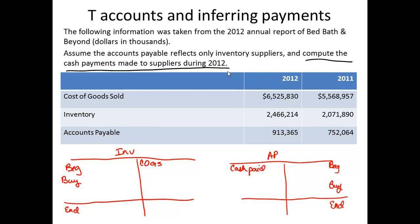This is Bed Bath & Beyond's 2012 annual report. We can see that accounts payable, the current liability, started the year with a balance of $752,064 — remember, this is in thousands — and the ending balance is $913,365. Accounts payable is increased when we buy resources on credit, such as inventory, and accounts payable is decreased when we pay those bills.